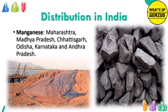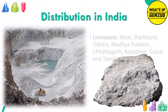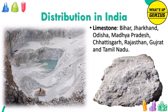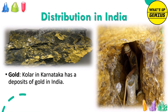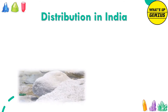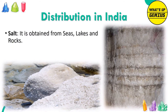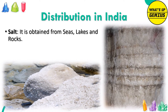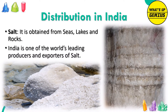Manganese is found in Maharashtra, Madhya Pradesh, Chhattisgarh, Orissa, Karnataka and Andhra Pradesh. Limestone is found in Bihar, Jharkhand, Orissa, Madhya Pradesh, Chhattisgarh, Rajasthan, Gujarat and Tamil Nadu. Gold: Kolar in Karnataka has significant gold deposits — these mines are among the deepest in the world, making mining very expensive. Salt is obtained from seas, lakes and rocks; India is one of the world's leading producers and exporters of salt.